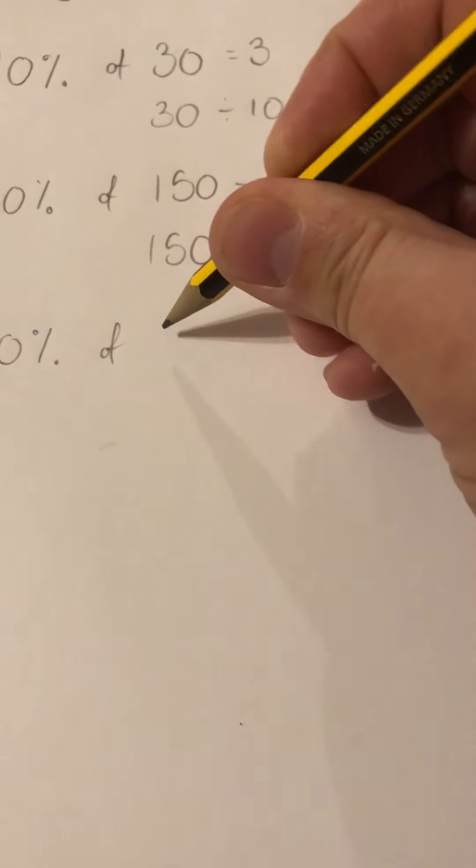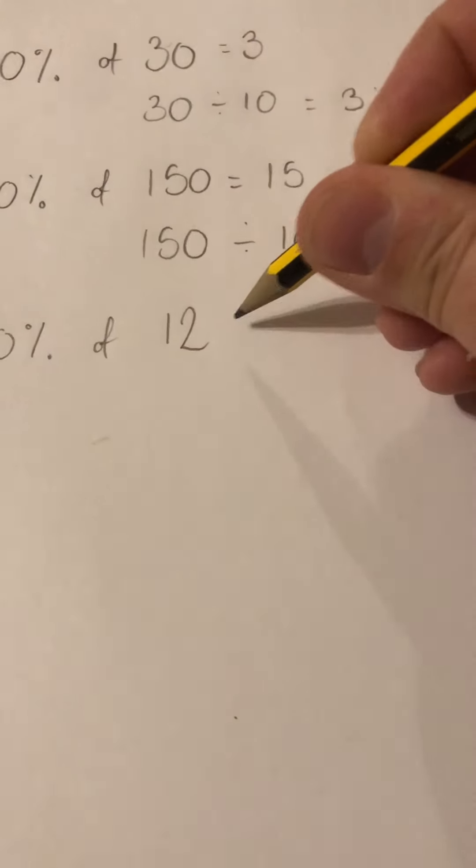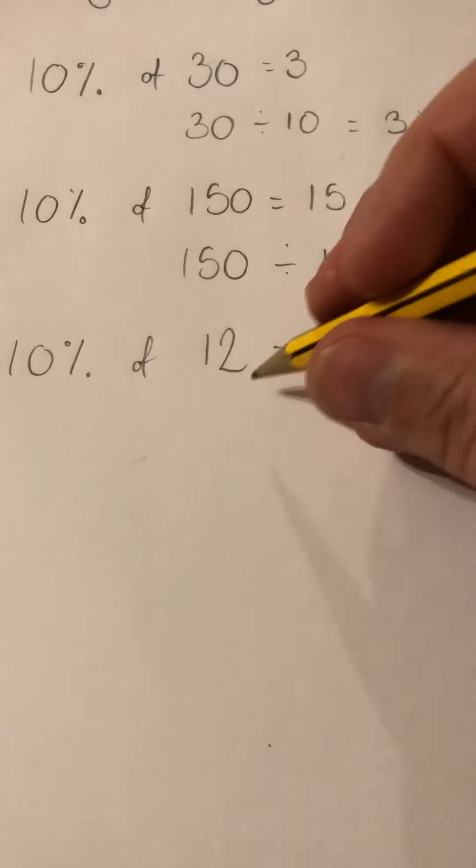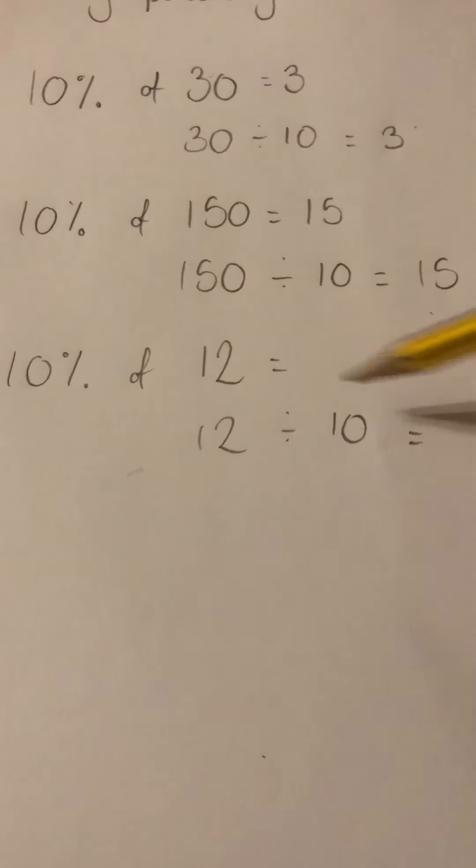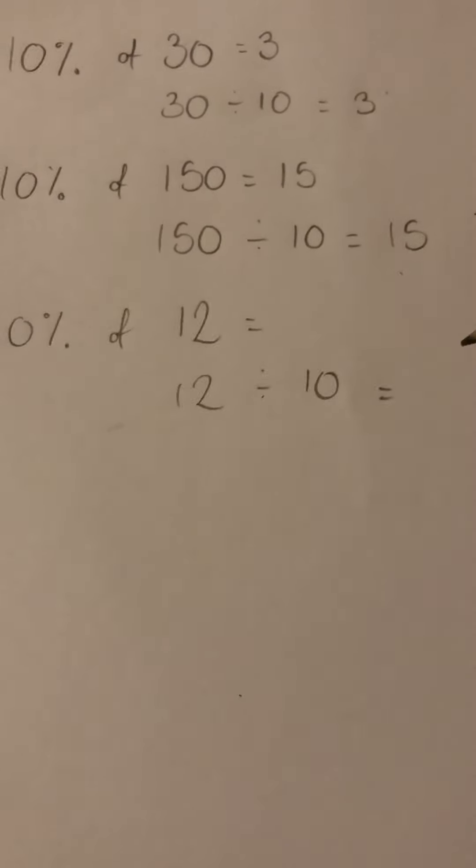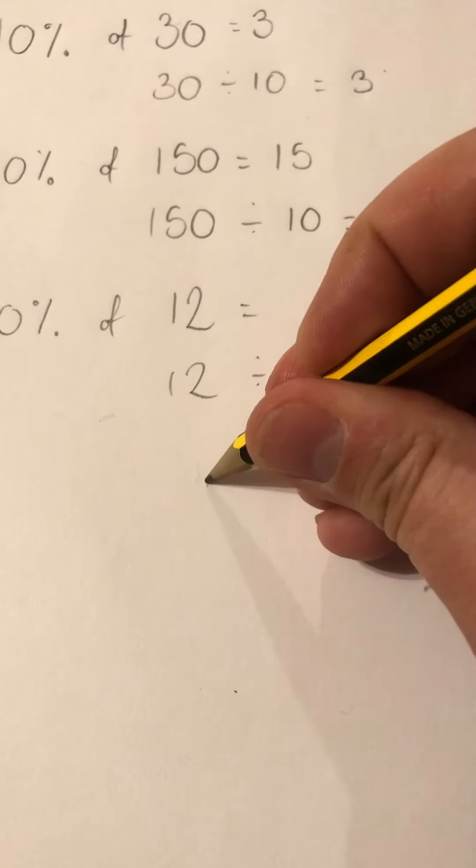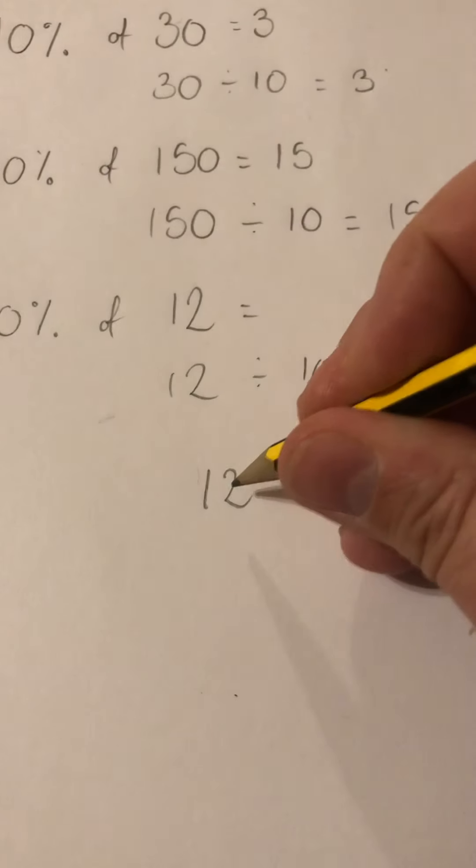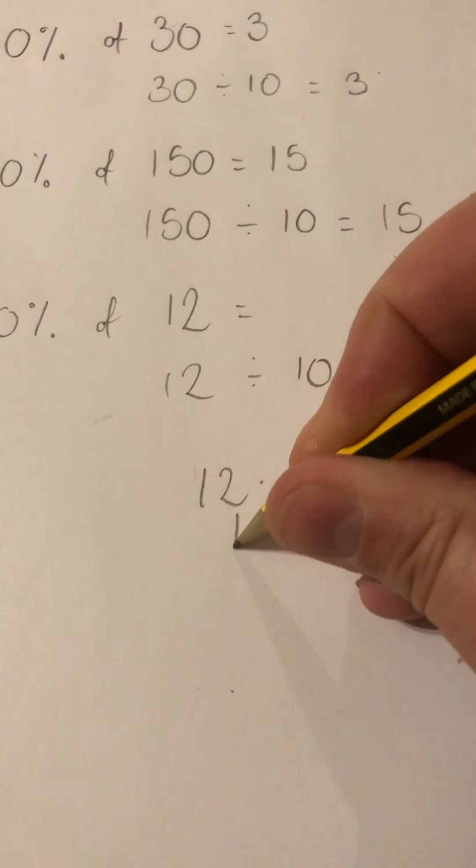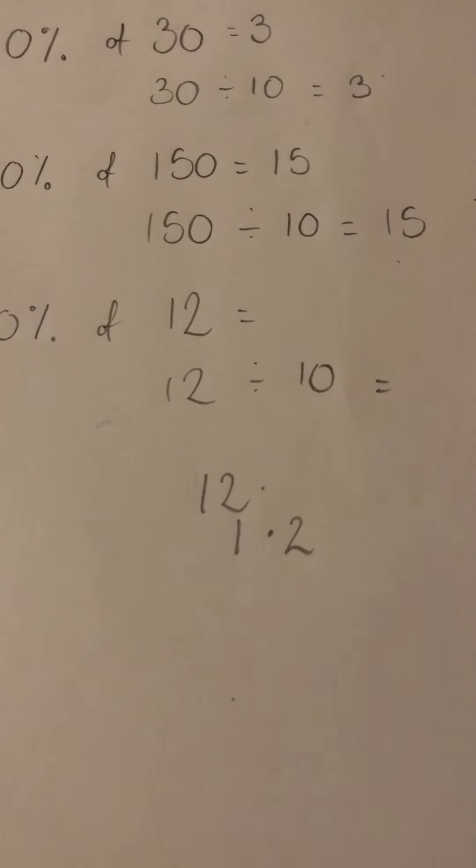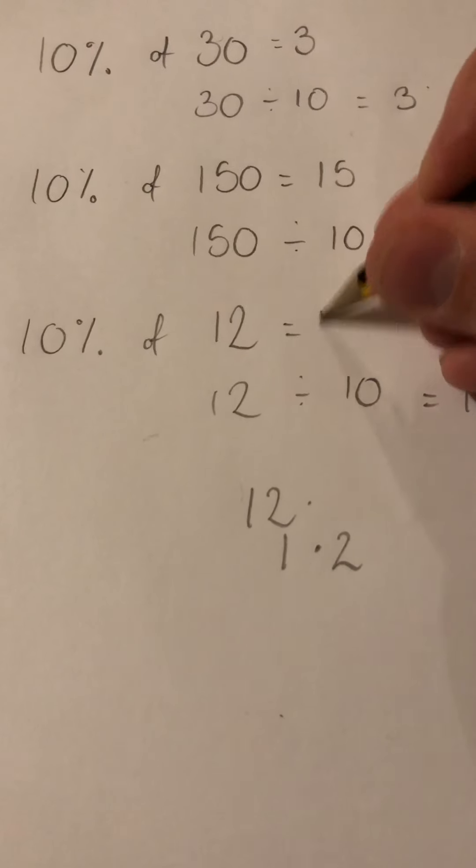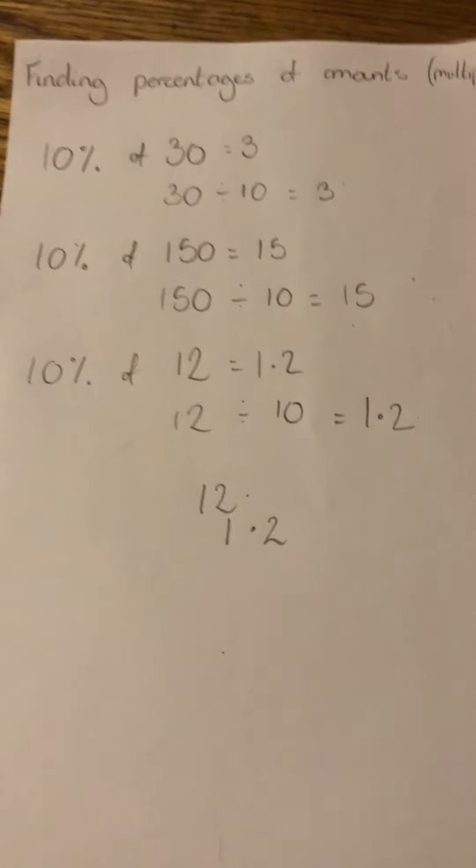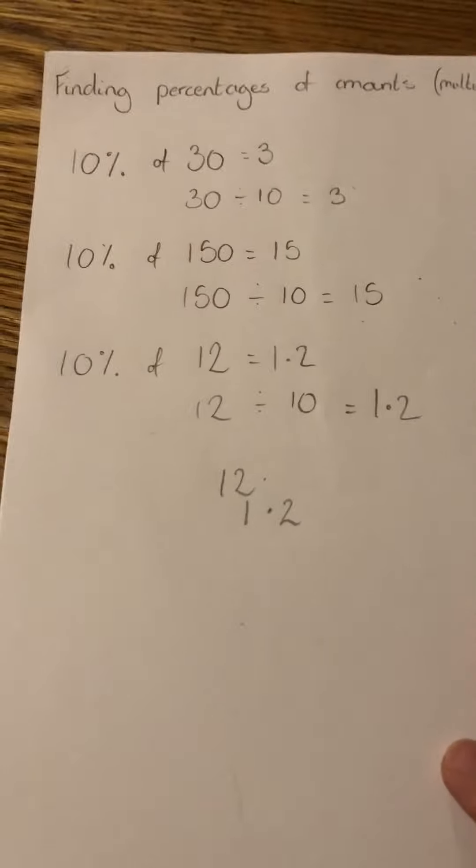That even works if I've got decimal numbers. So if I want 10% of 12, I'd have 12 divided by 10. If you're unsure, I've got 12 and I'm going to move it all one place smaller, so it becomes 1.2. So 10% of 12 is 1.2. That's great—it gives us 10%.